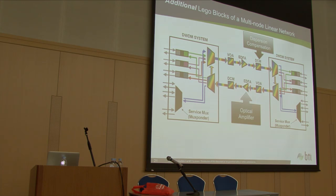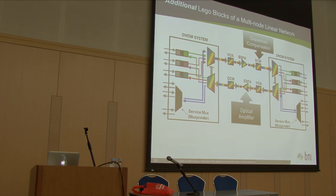An optical amplifier is another Lego block in your toolbox for designing optical networks. One other thing is DCM — or DCF — the Dispersion Compensation Module. It's also a very commonly used Lego block. Any true optical vendor will have amplifiers and DCM in the portfolio.